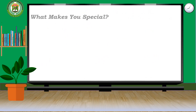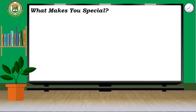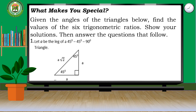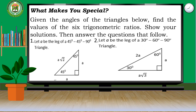Now let us answer the activity 'What makes you special?' Given the angles of the triangles below, find the values of the 6 trigonometric ratios and show your solutions. Number 1: let A be the legs of the 45-45-90 right triangle. Number 2: let A be the shorter leg of the 30-60-90 right triangle. You can pause and play this video to give you ample time in answering your module.